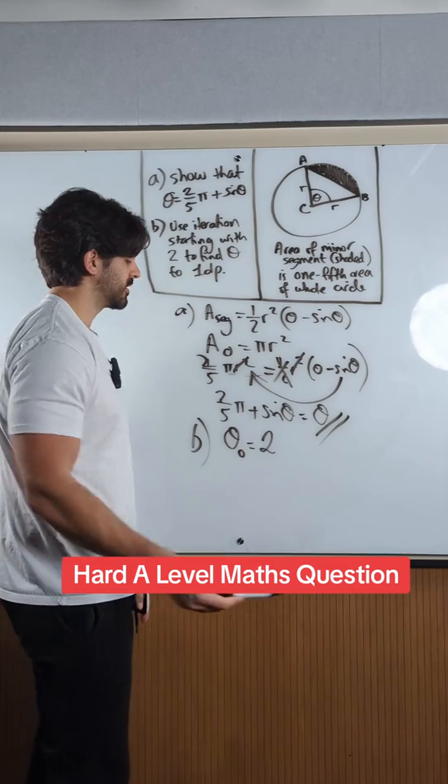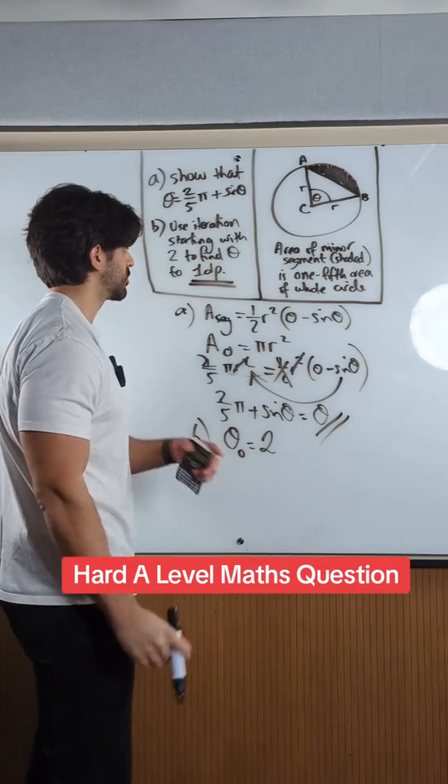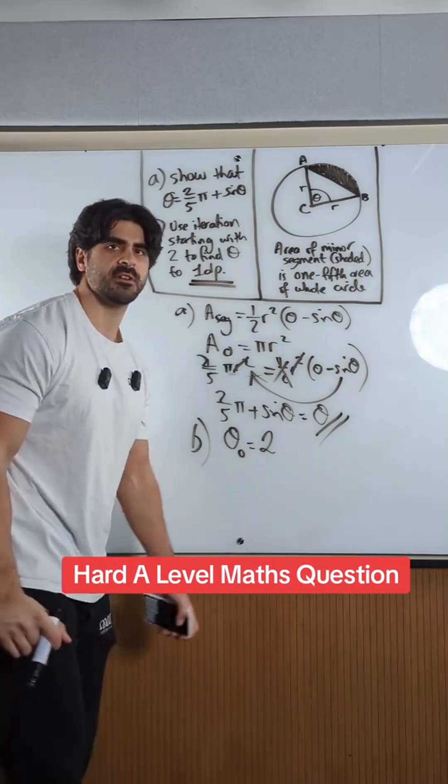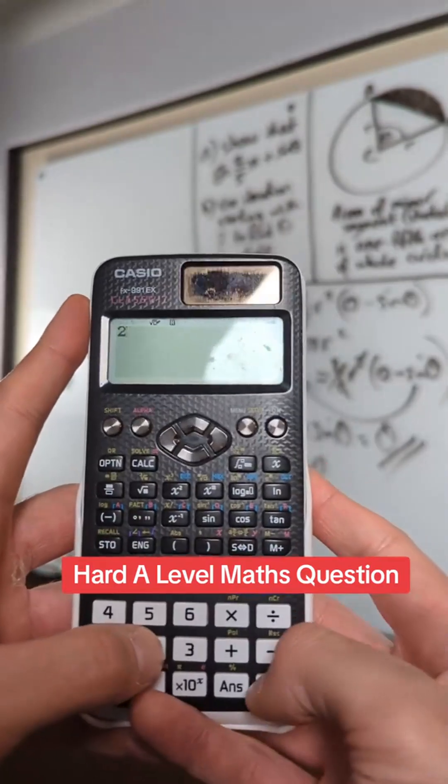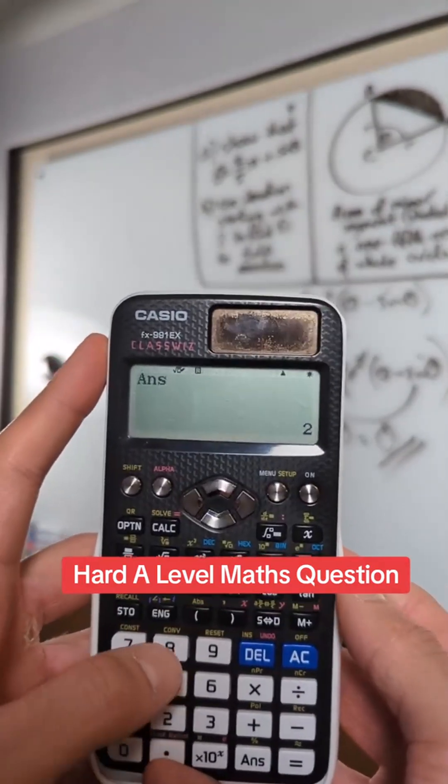You're basically going to do 2 equals, answer equals, and keep pressing equals until you find consecutive solutions to one decimal place. So we do 2 equals, answer equals. You have to make sure you're in radians.